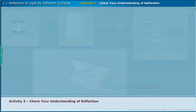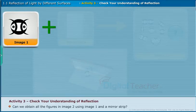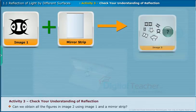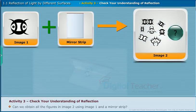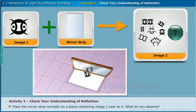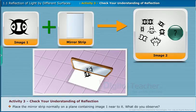Activity 3: Check your understanding of reflection. Can we obtain all the figures in image 2 using image 1 and a mirror strip? Place the mirror strip normally on a plane containing image 1, near to it. The image of the object is formed on the mirror due to the phenomenon of reflection, which is governed by certain laws. Let us now do an activity to verify these laws of reflection learnt in lower classes.